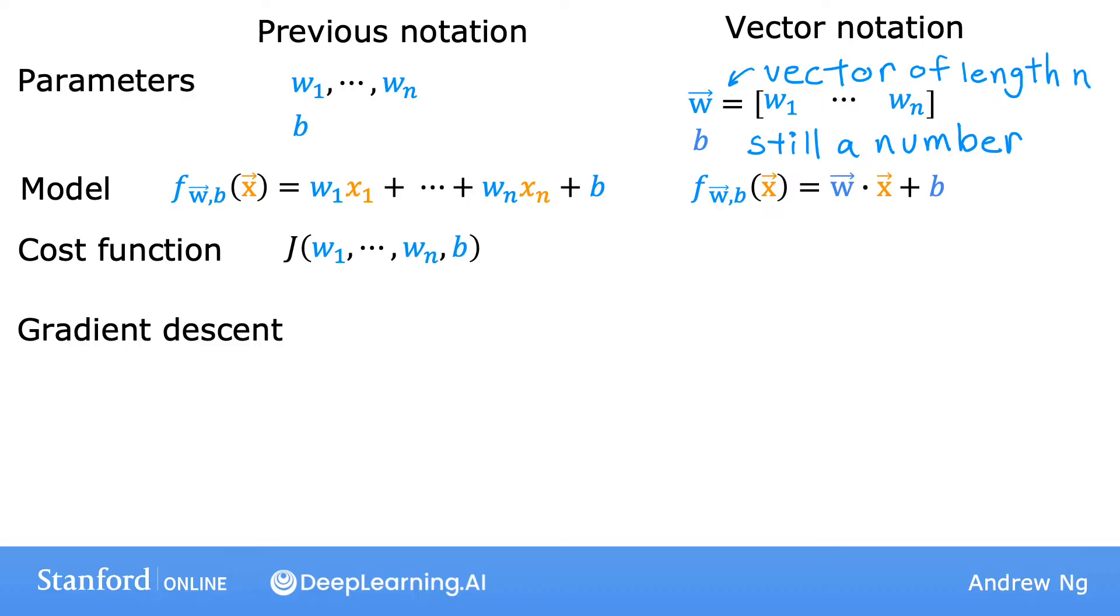And remember that this dot here means dot product. Our cost function can be defined as J of w1 through wn comma b, but instead of just thinking of J as a function of these n different parameters wj as well as b,